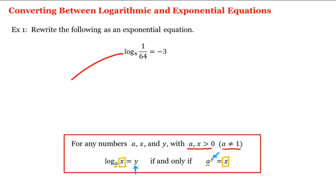So matching our equation to the left hand side here, we have that the base a equals 4, x, what we're taking the log of, equals 1 over 64, and y, the answer to the logarithm, equals negative 3.